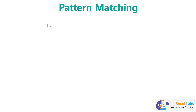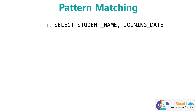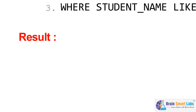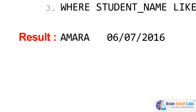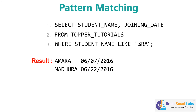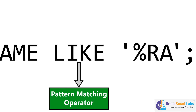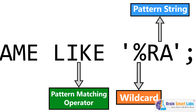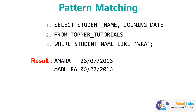Let me give one more example. The query SELECT STUDENT_NAME, JOINING_DATE FROM TOPPERTUTORIALS WHERE STUDENT_NAME LIKE '%RA' returns Amara followed by her joining date, and Madhura followed by her joining date. Here LIKE is the pattern matching operator, '%RA' is the pattern string, and the % symbol acts as a wildcard. This pattern matching is done to match all students whose names are ending with characters RA.